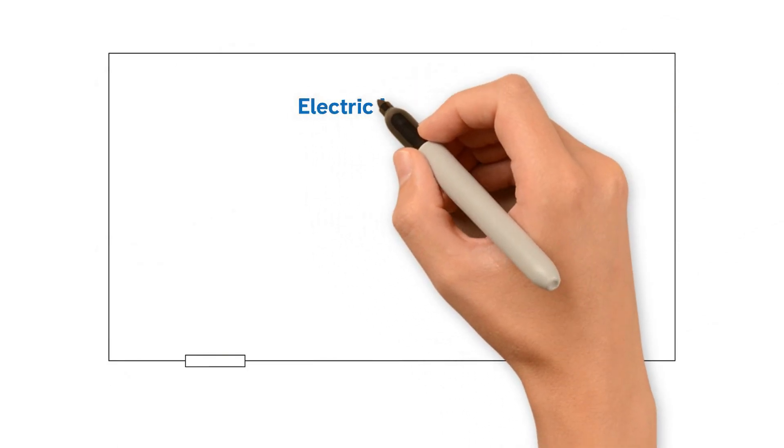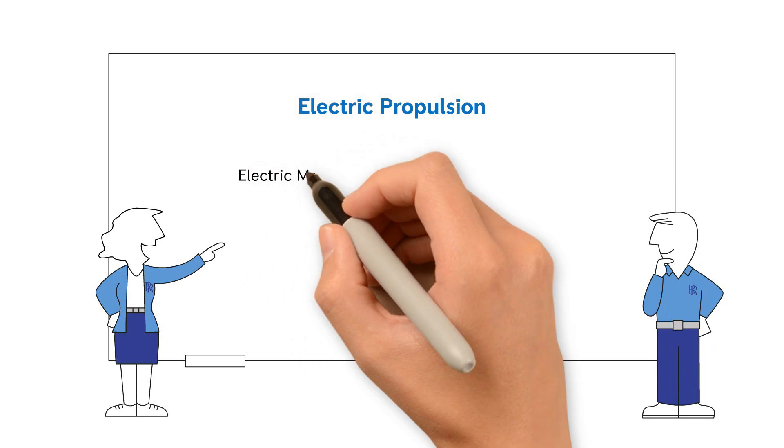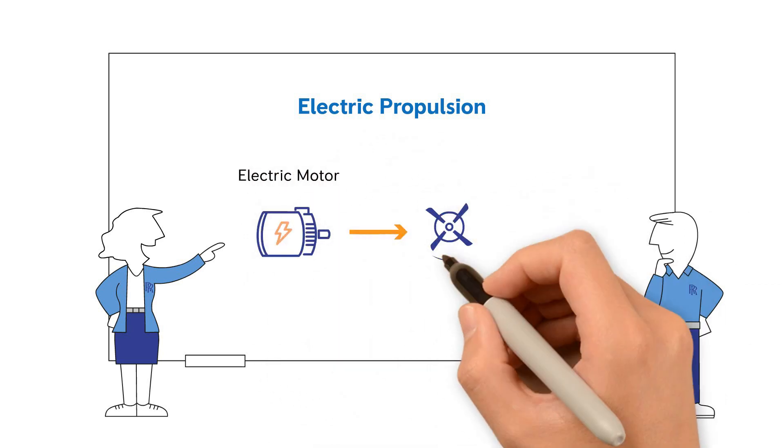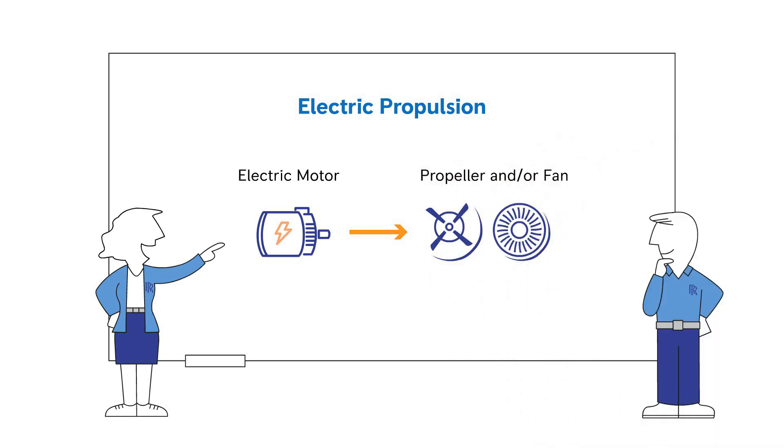In all these electrical power and propulsion systems, the same fundamental technical principles apply. The electrical motor converts electrical power into mechanical power. In the case of an aircraft, to provide thrust using a propeller or a fan.